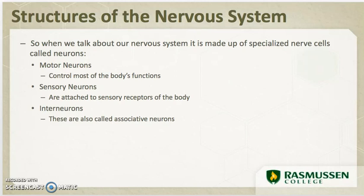Motor neurons control most of the body's functions. They cause a muscle to contract, glands to secrete, and organs to function. This type of neuron is called an efferent neuron, which means they can transmit an impulse away from the body's cell and go to the central nervous system to stimulate a muscle, organ, or a gland.